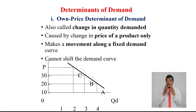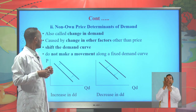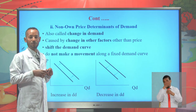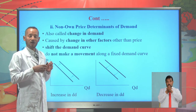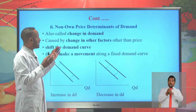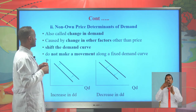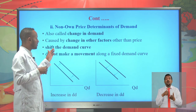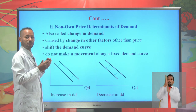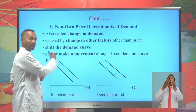The non-own-price determinants of demand are factors that shift the demand curve from its entire position. These factors are also called change in demand, caused by changes in factors other than the price of a commodity. These factors shift the demand curve either to the left or to the right. Any factor that increases demand for a commodity will shift the demand curve to the right.